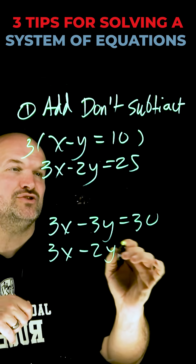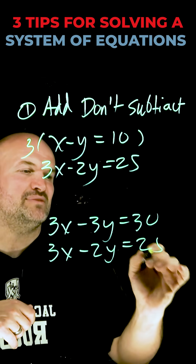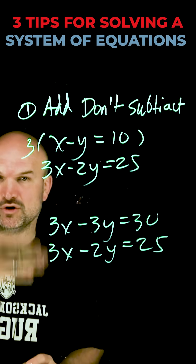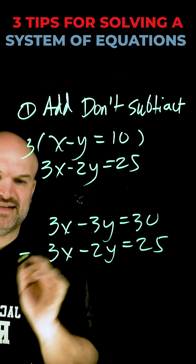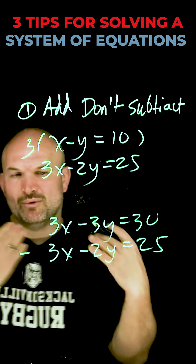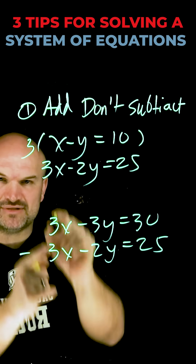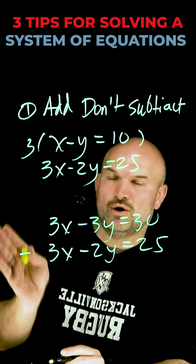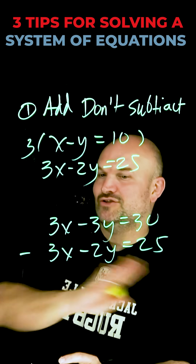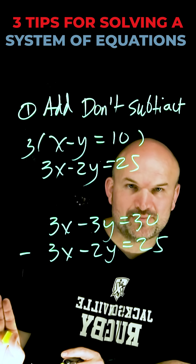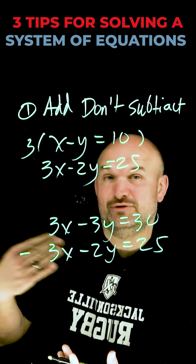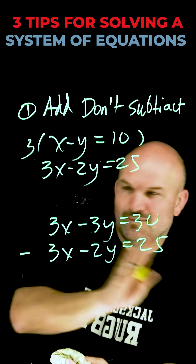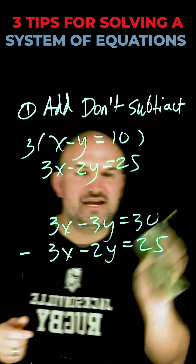The problem is students are going to make mistakes, because when they have variables that are exactly the same — both positive or both negative — they need to subtract them. Students usually don't have a problem subtracting on one side, but they have a problem when there are negatives. You can still go through this process, but in my opinion, if you want to avoid mistakes, don't subtract — add the equations.